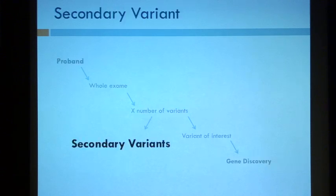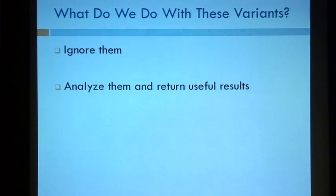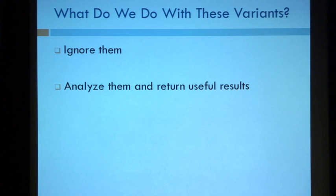Unfortunately, what I want to tell you today is about everything else — that's the tens to hundreds of thousands of variants minus the one or two primary variants. The reality is I think many of us ignore them. We are very excited about our primary variants, we're doing functional studies, we're writing papers, and these variants are living in our computer in a file somewhere. I hope to convince you that you need to take them off the shelf, analyze them, at least look at them, and make sure there's nothing there that you need to be returning to your patients.